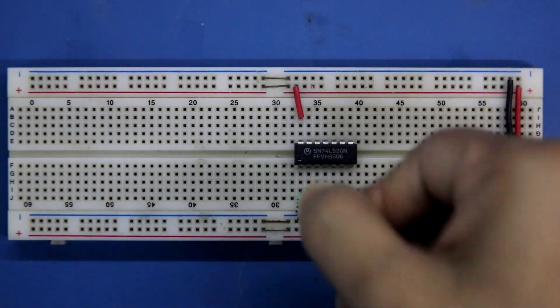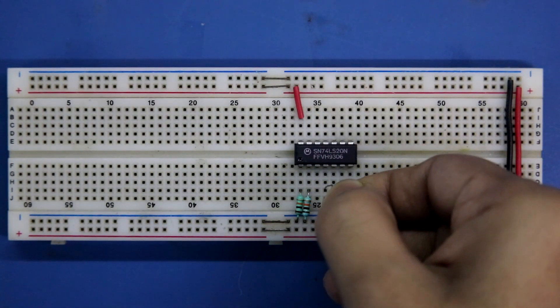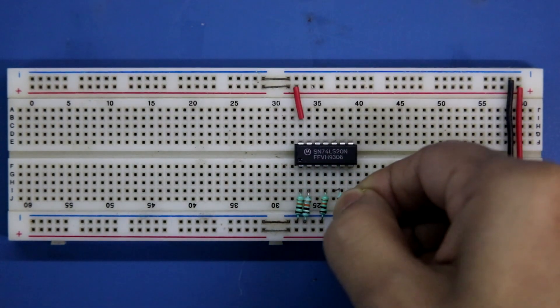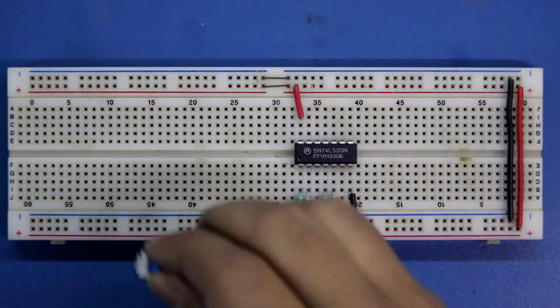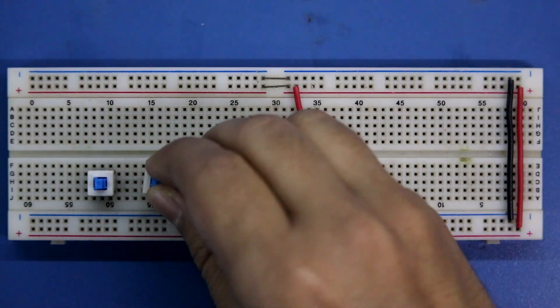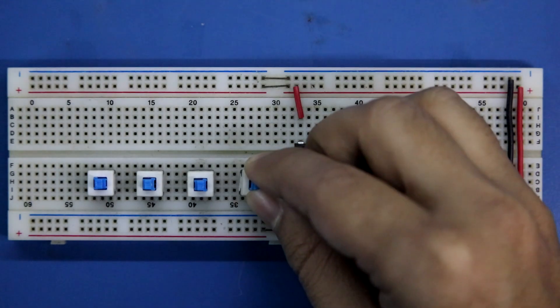Connecting the 10 kohms resistor with pin number 1, 2, 4 and 5, and then it is connected to the ground. Input A, input B, C and D.